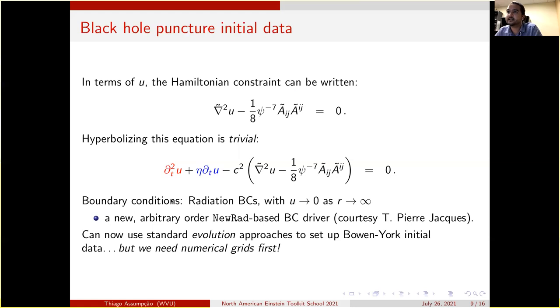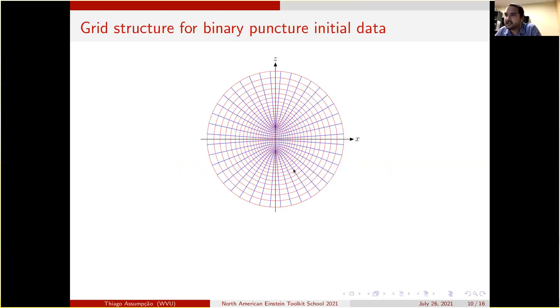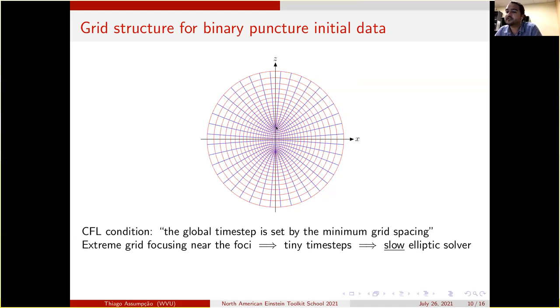Let's first discuss the numerical grids we're using. This is the kind of grid we are using—prolate spheroidal coordinates—and we have two foci and we place each puncture at each focus. But the CFL condition: notice there's a lot of resolution near the punctures but the grid is much coarser further away. And the CFL condition dictates that the global time step is set by the minimum grid spacing. Because we have extreme focusing near the foci, we can only take very tiny time steps, which makes our elliptic solver slow.